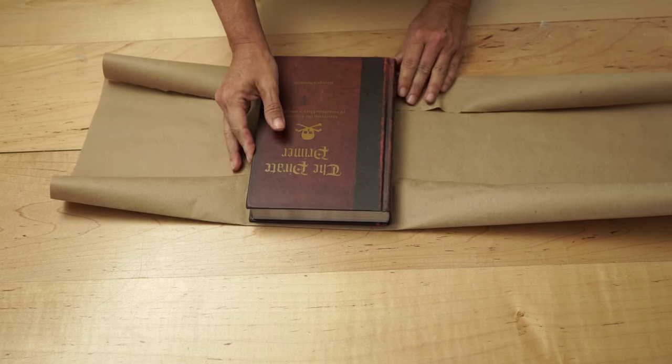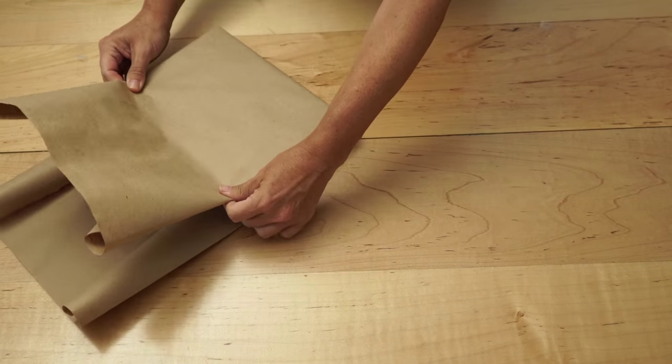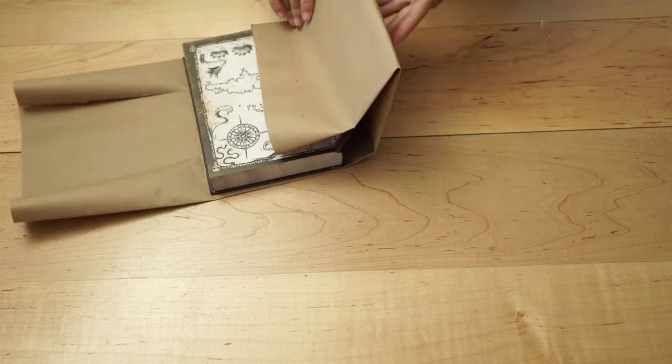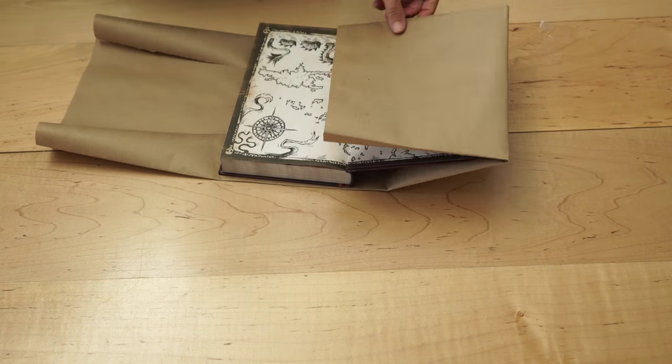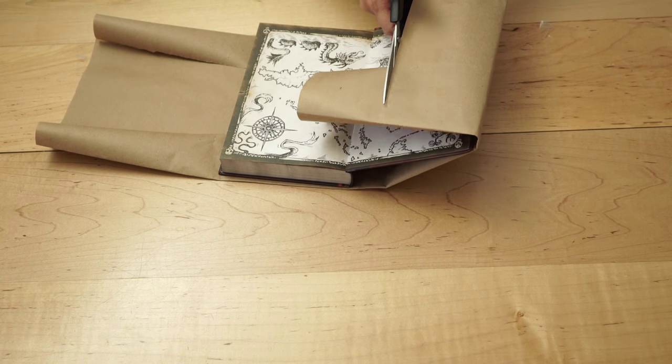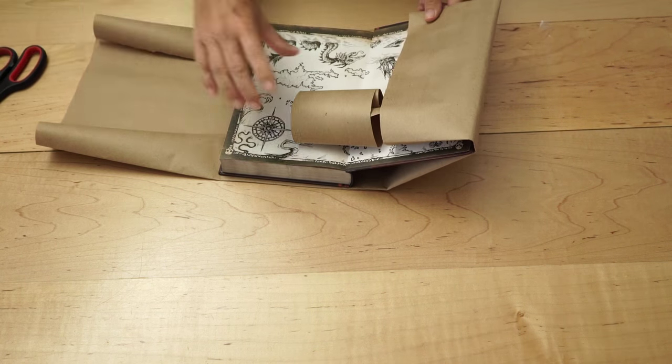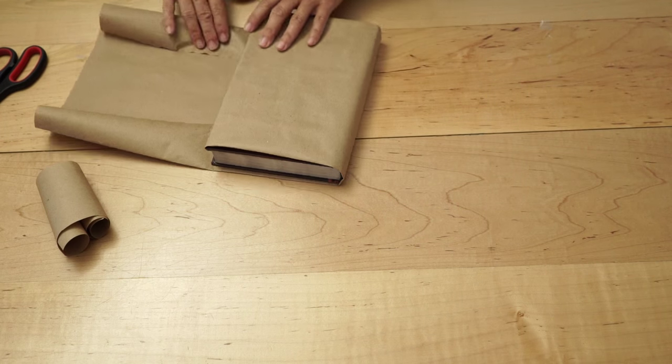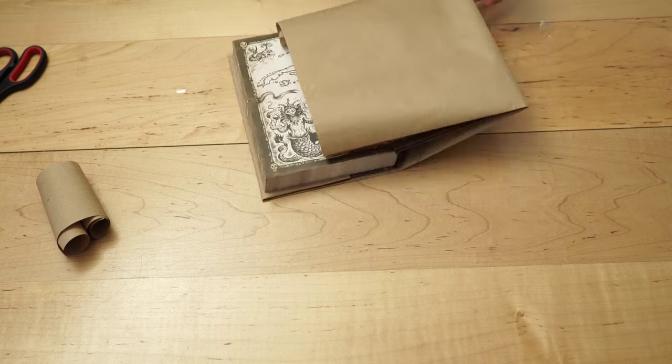Fold over the ends of the paper and cut off the excess, leaving about one inch before the binding of the book. Do the same to the other side.